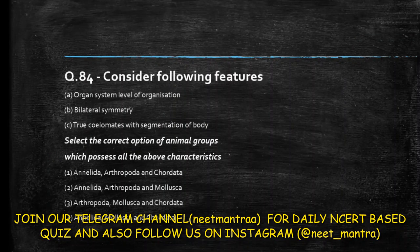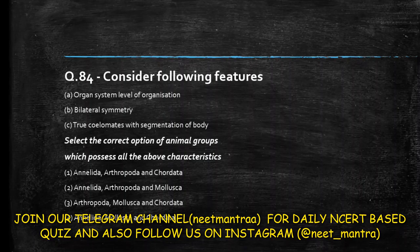Next question: consider the following features — organ system level of organization, bilateral symmetry, true coelom with segmentation of body. Select the correct option of animal group which possesses all the above characters. Options include Annelida, Arthropoda, Chordata, and Mollusca in various combinations. Annelida possesses all three: organ system level, bilateral symmetry, and true coelom with segmentation. The answer includes Annelida and Arthropoda and Chordata.